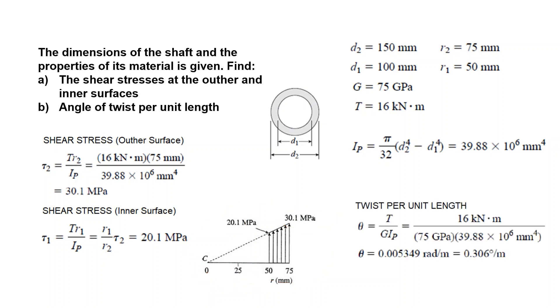Twist per unit length: we know the formula, torque times length, shear modulus and moment of inertia. When we like to know the twist per unit length, divide both sides by L and you will get a relation like this. Put the numerical values and you will get the result in radians per meter, or you can convert it into degrees per meters by multiplying with 180 and dividing by pi.